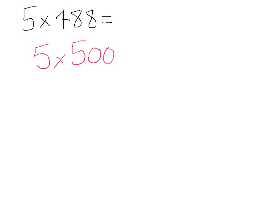So it becomes 5 times 500, but we've multiplied too many, so we need to take something off. So we're going to take away 5 times, and the difference between 488 and 500 is 12, so we take away 5 times 12.